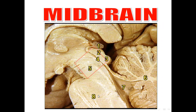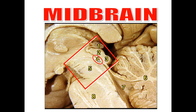In the sagittal section, number four is the cerebral aqueduct, which divides the midbrain into the anterior part (number five, the cerebral peduncle) and the posterior part (the tectum — numbers two and three), consisting of the superior colliculus and the inferior colliculus. Number one is part of the epithalamus, and this is the pineal gland.